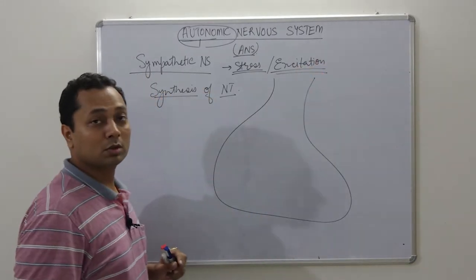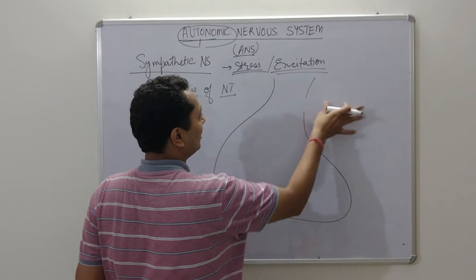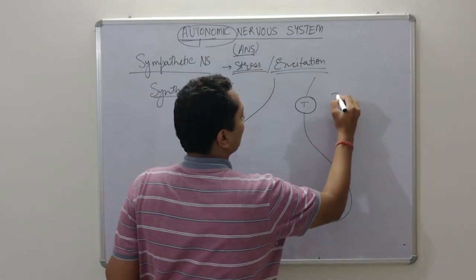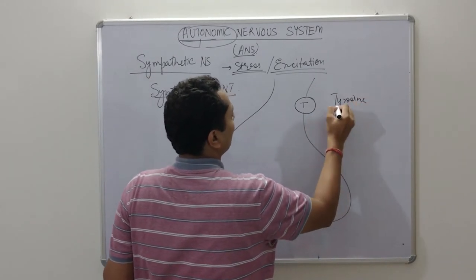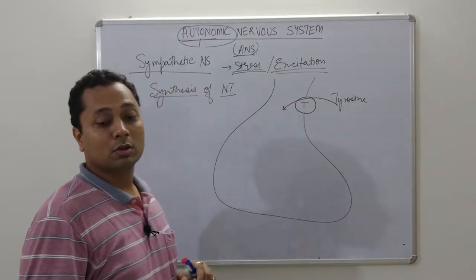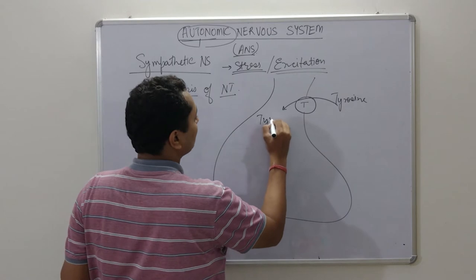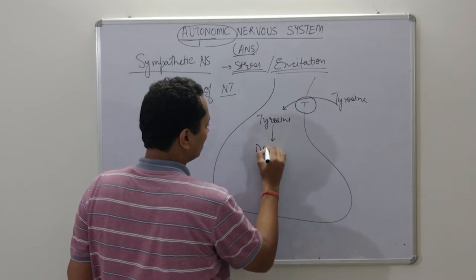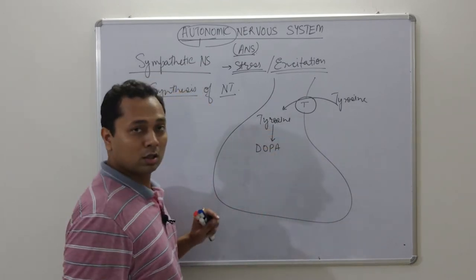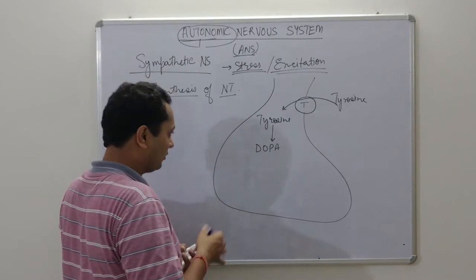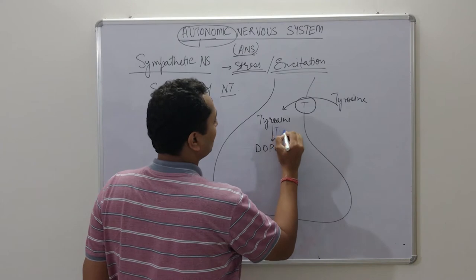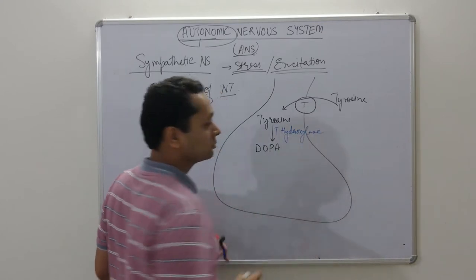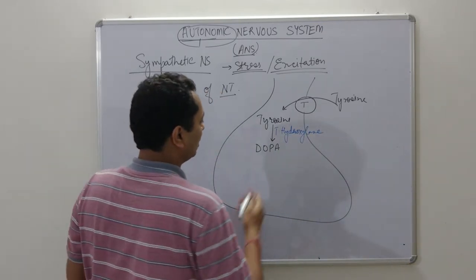If we look at this neuron, there will be a transporter — let's call it T — and it will transport tyrosine inside the neuron. This tyrosine comes inside the neuron and is then converted into DOPA. The enzyme involved in this step is tyrosine hydroxylase.